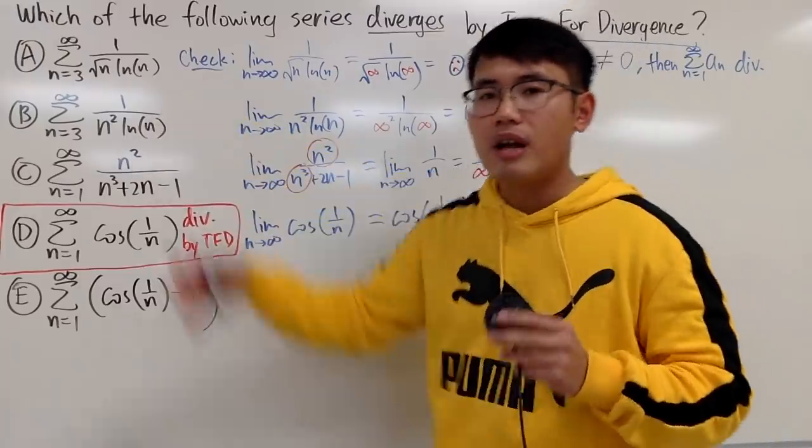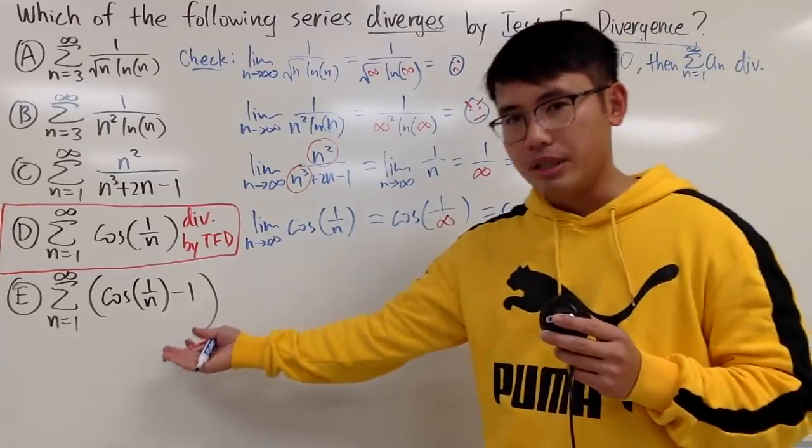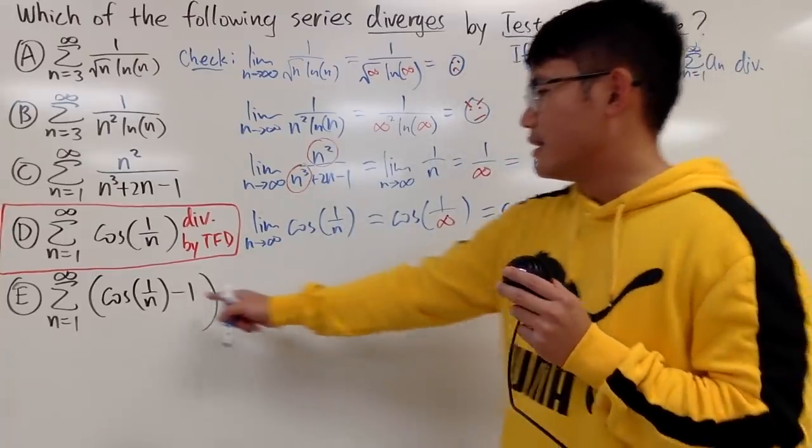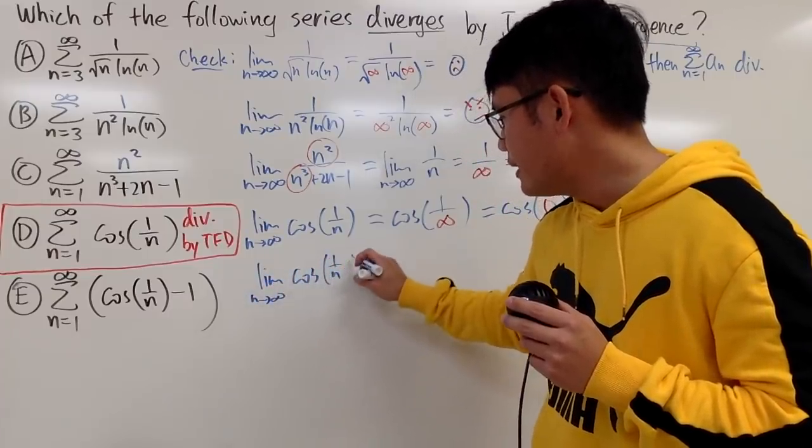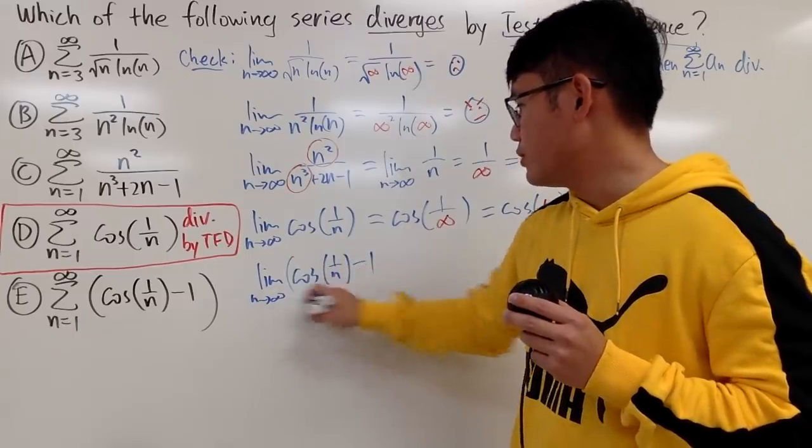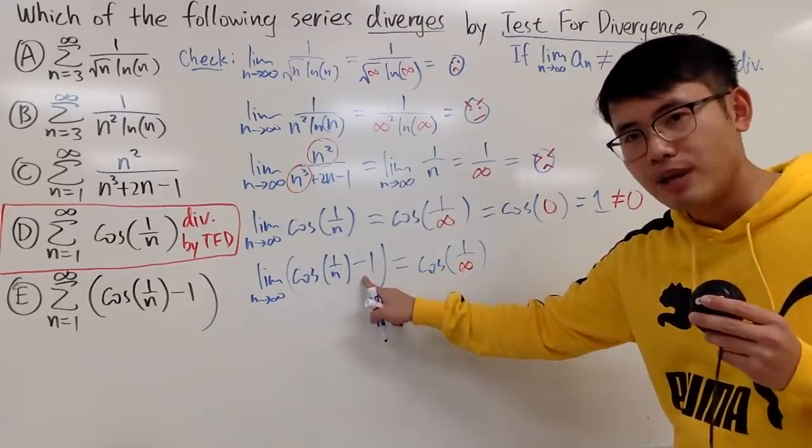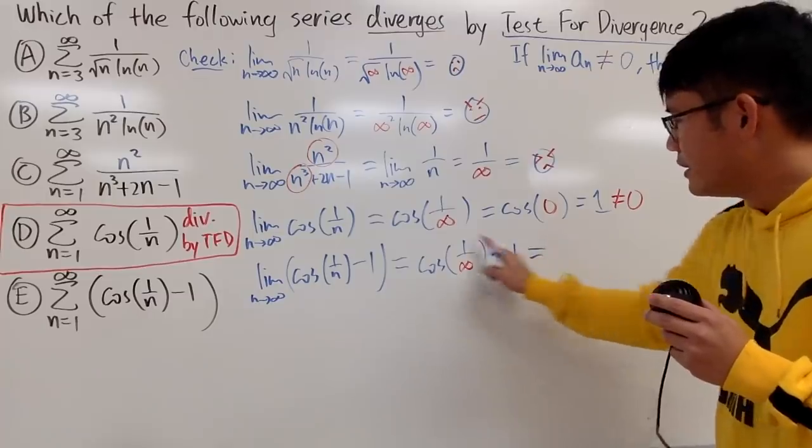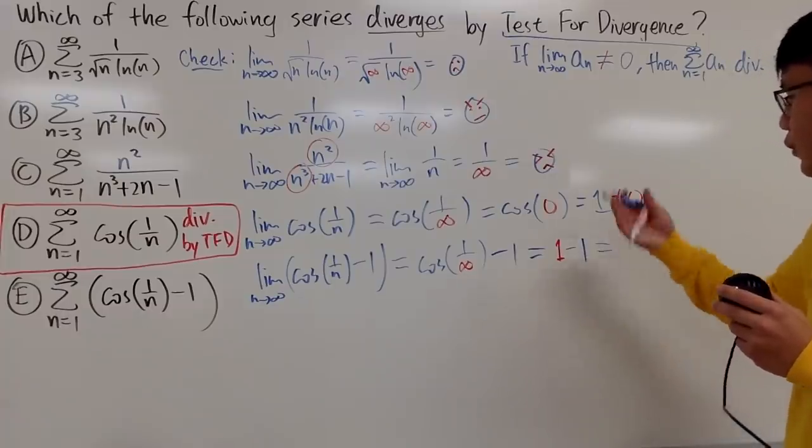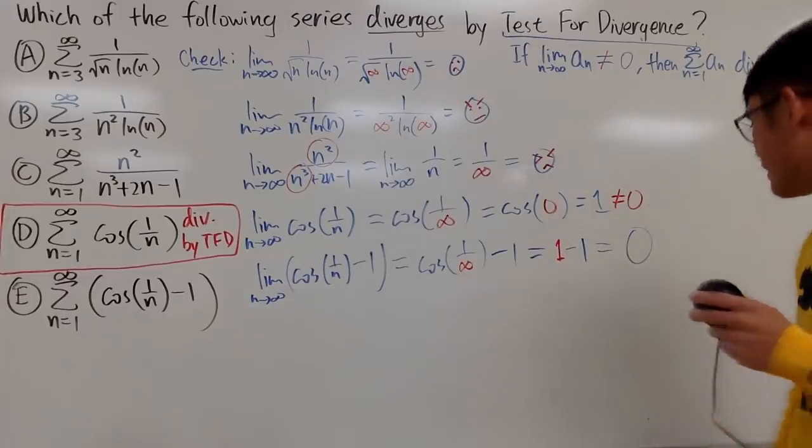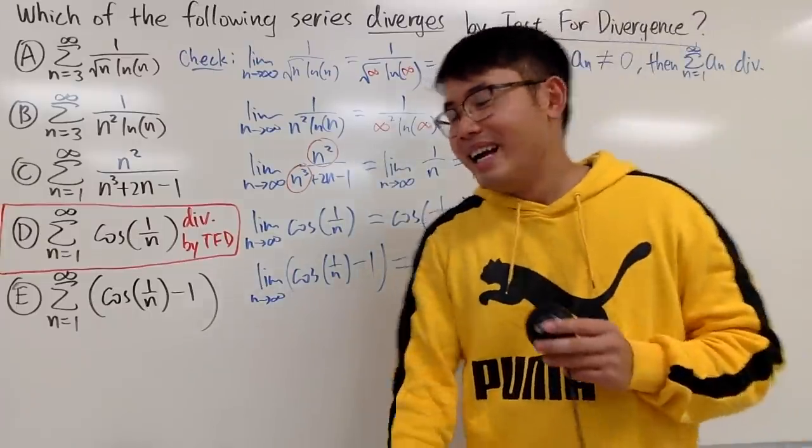And then for these three right here, I don't know if they convert or they diverge. I couldn't do any conclusion. Well, let's talk about E as well, because this is also really interesting. Yes, if you take the limit of the cosine of 1 over n and then minus 1, this is slightly more interesting. Because you put down cosine of 1 over infinity. But this time, you have the minus 1. This right here is this 1. And then we have this another minus 1. So 1 minus 1, of course, is 0. So this time, I don't know, it's like this kind of phase, I guess.